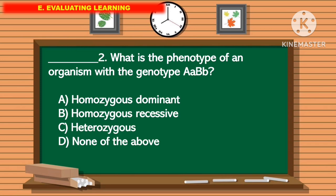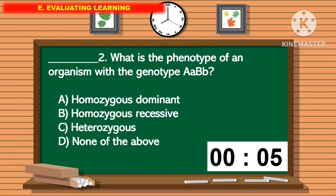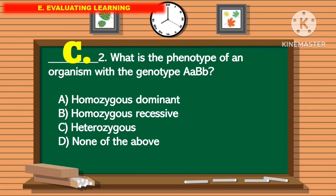For question number 2, what is the phenotype of the organism with the genotype capital A, small a, capital B, and small b? The correct answer is letter C.